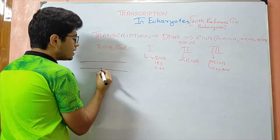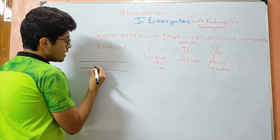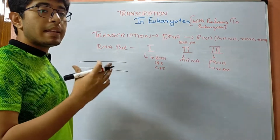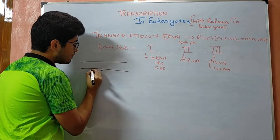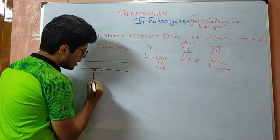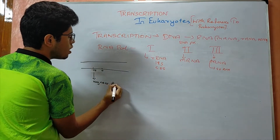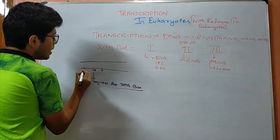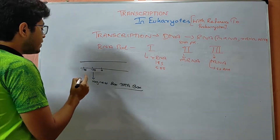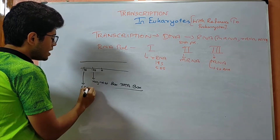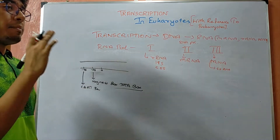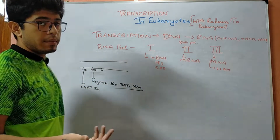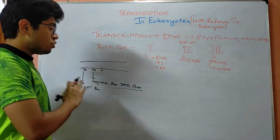There is a start point from where the transcription process begins. Instead of the Pribnow box or minus-10 sequence present in prokaryotes, here we have a minus-25 sequence known as the Hogness box, also called the TATA box. We also have a minus-75 sequence where we have the CAAT box, and in some cases a minus-90 sequence which is the GC-rich box.